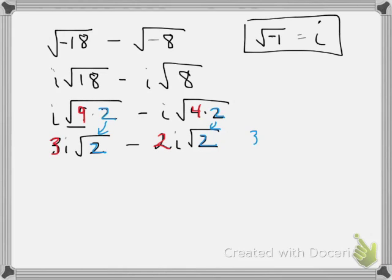So, what's our final answer here? We have 3i times the square root of 2, minus 2i times the square root of 2.